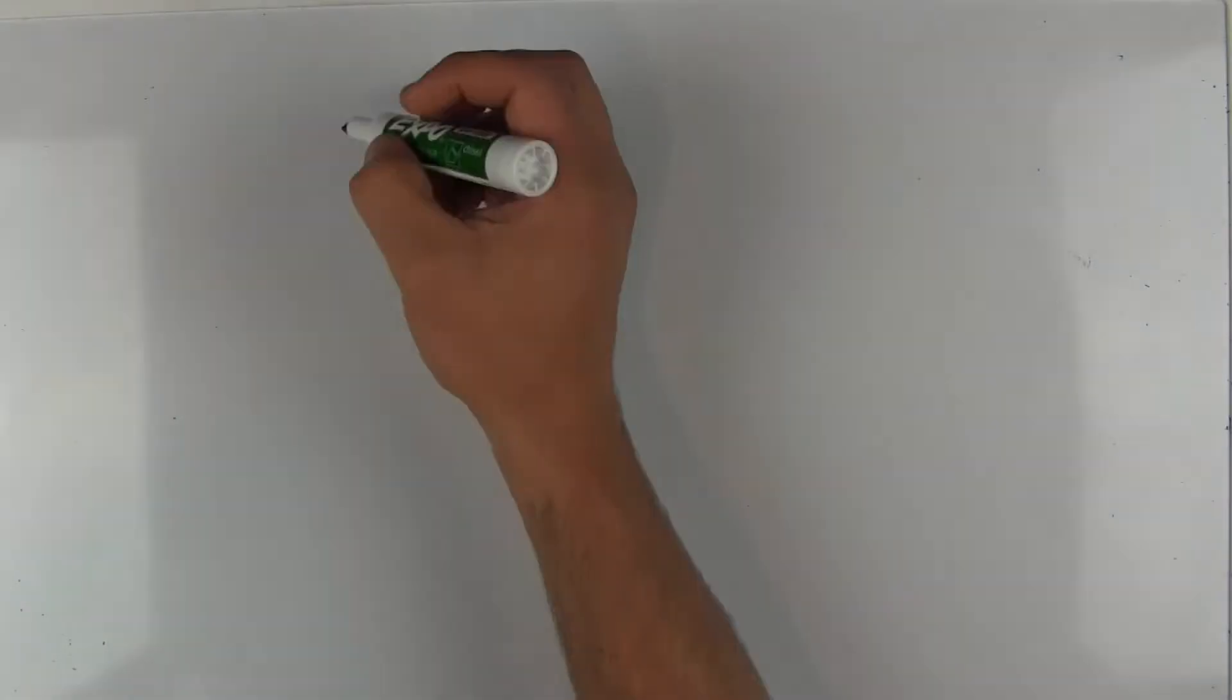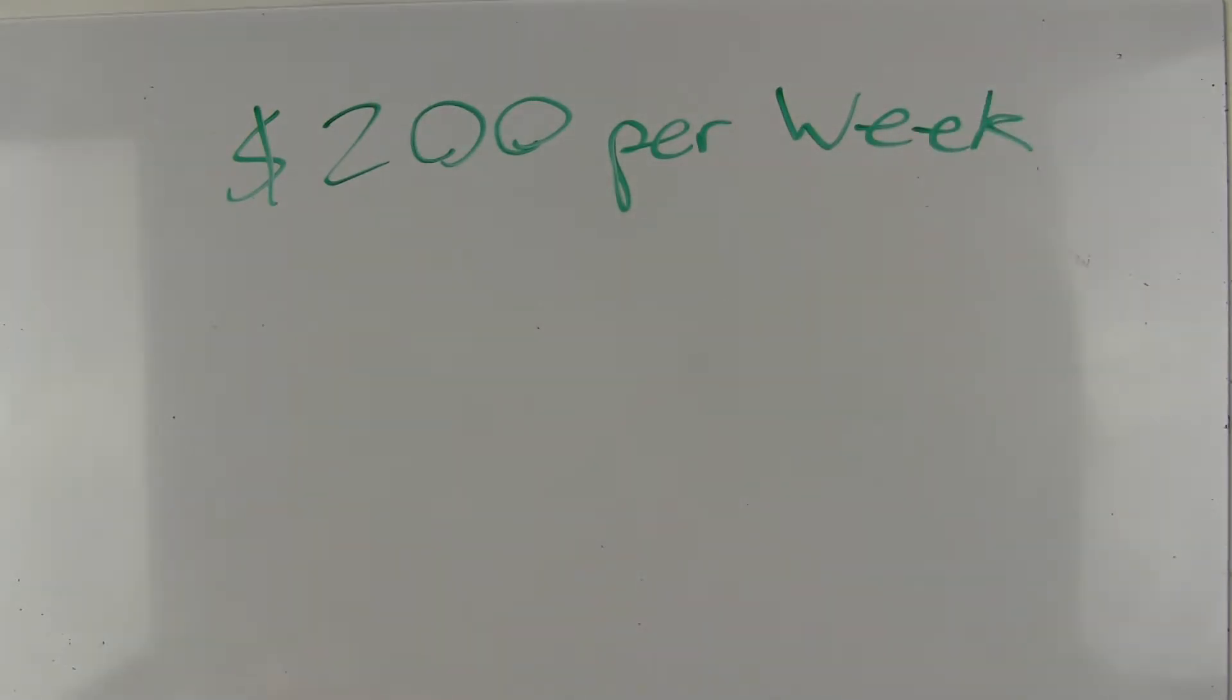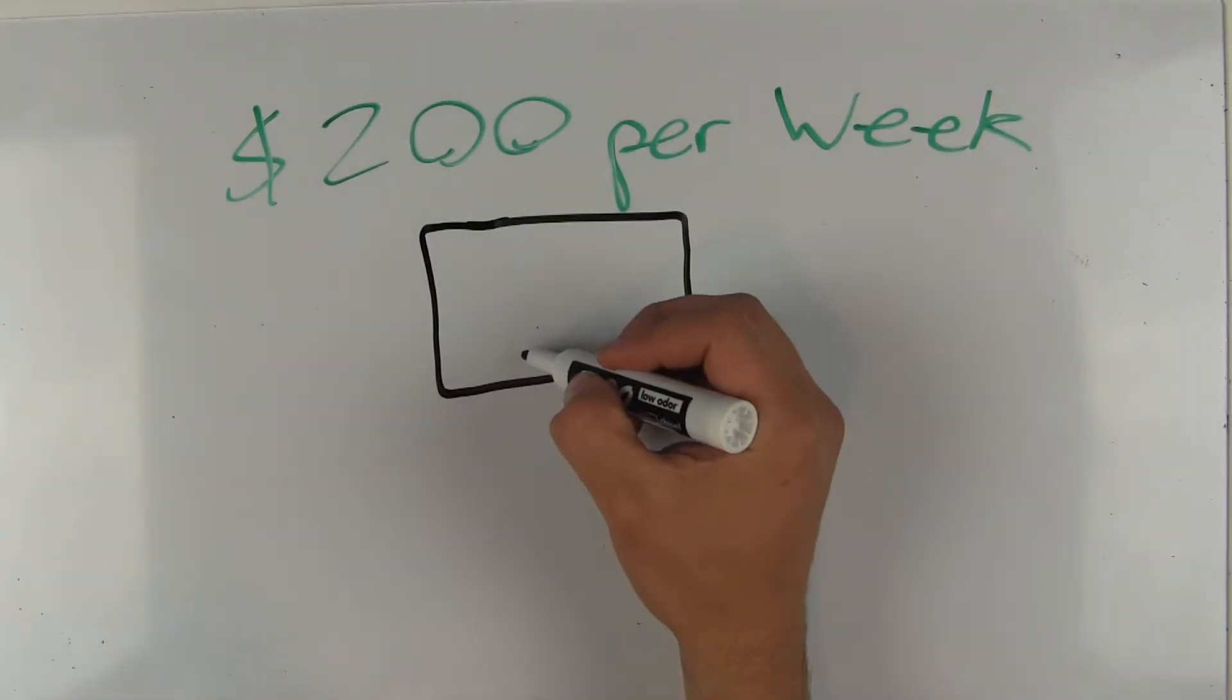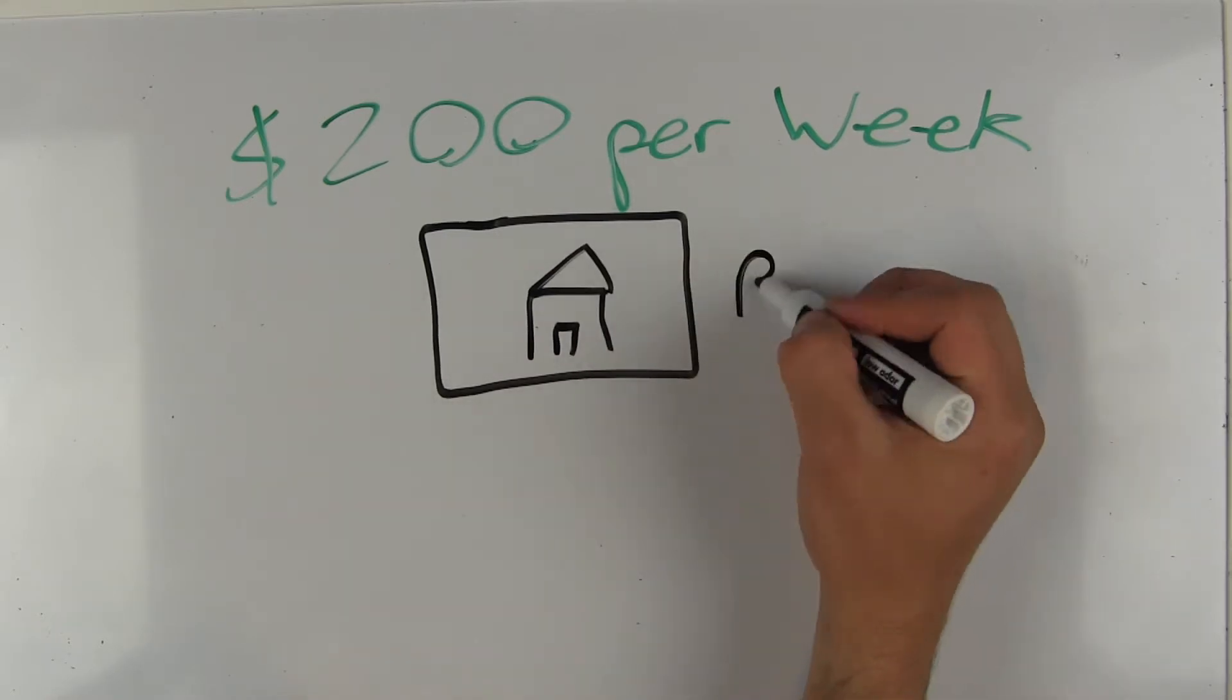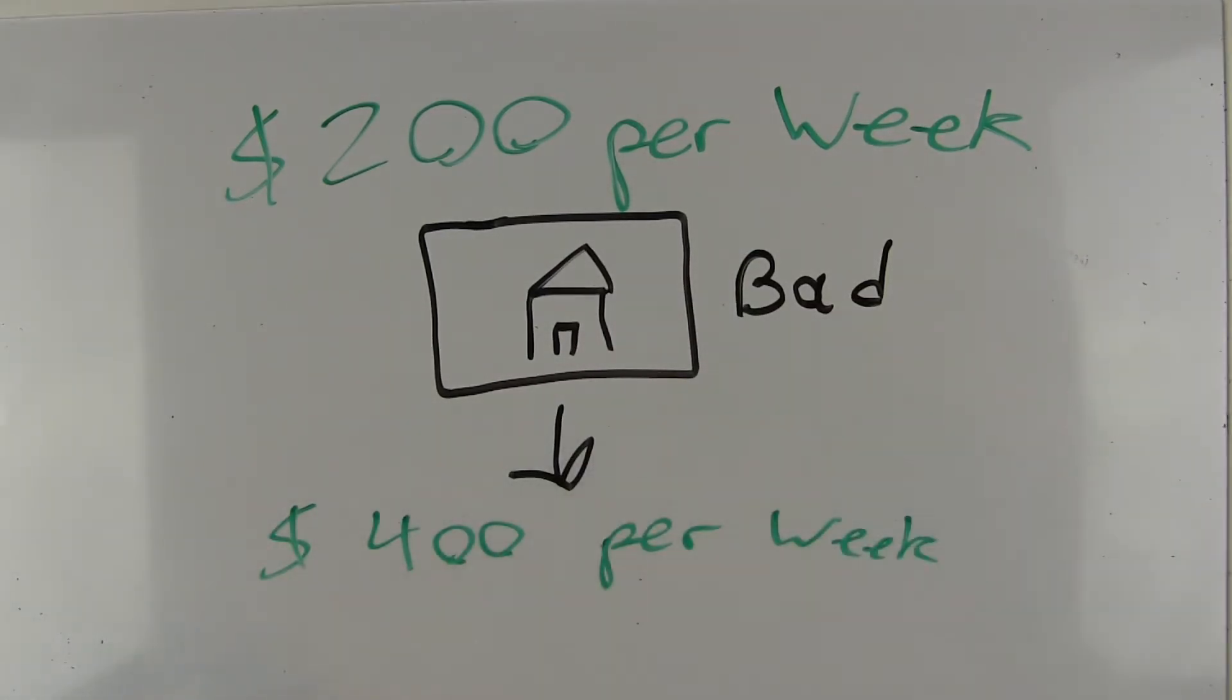After this, the company was doing okay, making about $200 per week, but it was not growing at all. The founders realized that a lot of the pictures on their site showing the houses available for stays had horrible pictures. So they went around to all the listed houses in New York City and took new pictures.